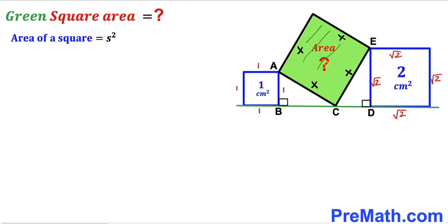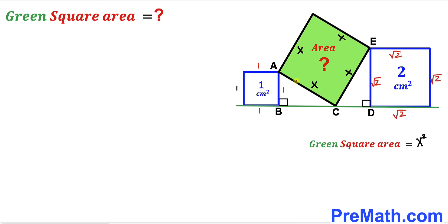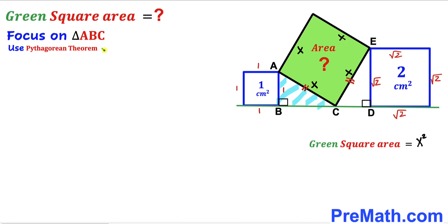Focusing on the green shaded square: its side length is x, so the green square's area equals x². Our task is to find the value of x². Note that side AC equals side CE — these side lengths are congruent. Now let's focus on the small right triangle ABC and apply the Pythagorean theorem to it.